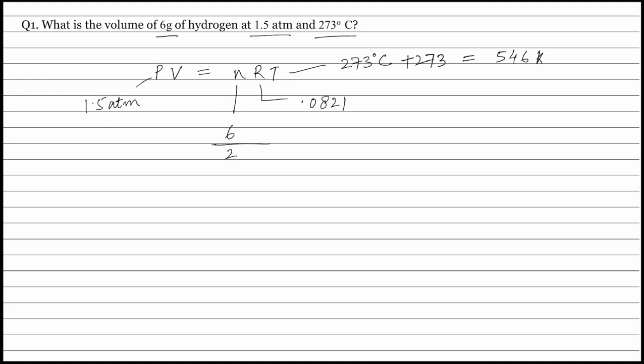Putting the values in the gas equation, we get the volume of hydrogen equal to 89.6 liters.